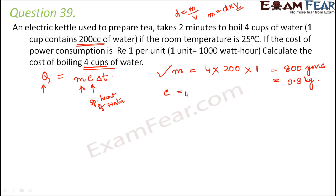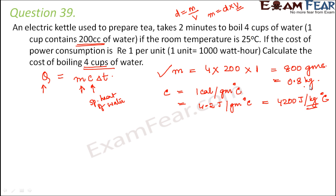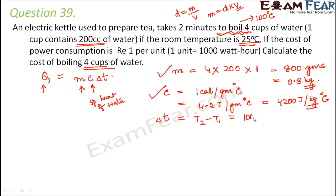The specific heat of water is 1 calorie per gram per °C, which converts to 4.2 J/g°C or 4200 J/kg°C. The room temperature is 25°C and we want to reach boiling point at 100°C, so ∆T = 100 − 25 = 75°C.